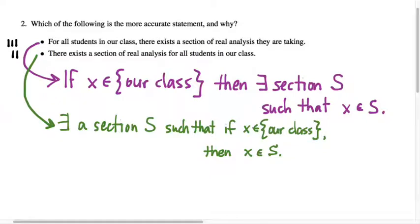The fundamental difference between these two statements is that the green statement up here, the second statement, says first there exists a section. So it brings one section onto the table. And then it says everyone in our class is associated with that section.